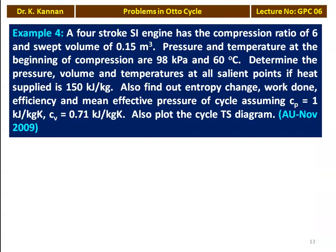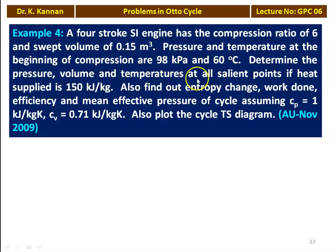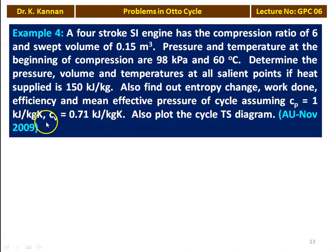Example number 4 from the November 2009 question paper. A 4-stroke SI engine has a compression ratio of 6 and swept volume of 0.15 m³. The pressure and temperature at the beginning of compression are 98 kPa and 60°C. Determine pressure, volume, and temperature at all salient points if heat supplied is 150 kJ/kg. Also find entropy change, work done, efficiency, and mean effective pressure. Assume Cp equals 1 kJ/kg·K and Cv equals 0.71 kJ/kg·K. Also plot the cycle on the T-s diagram.